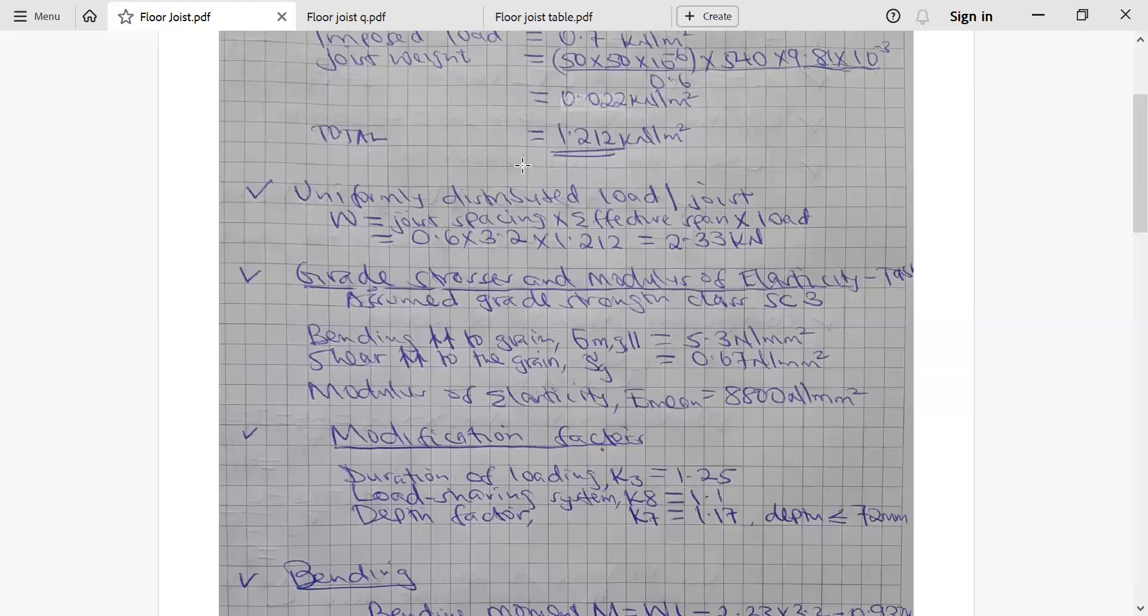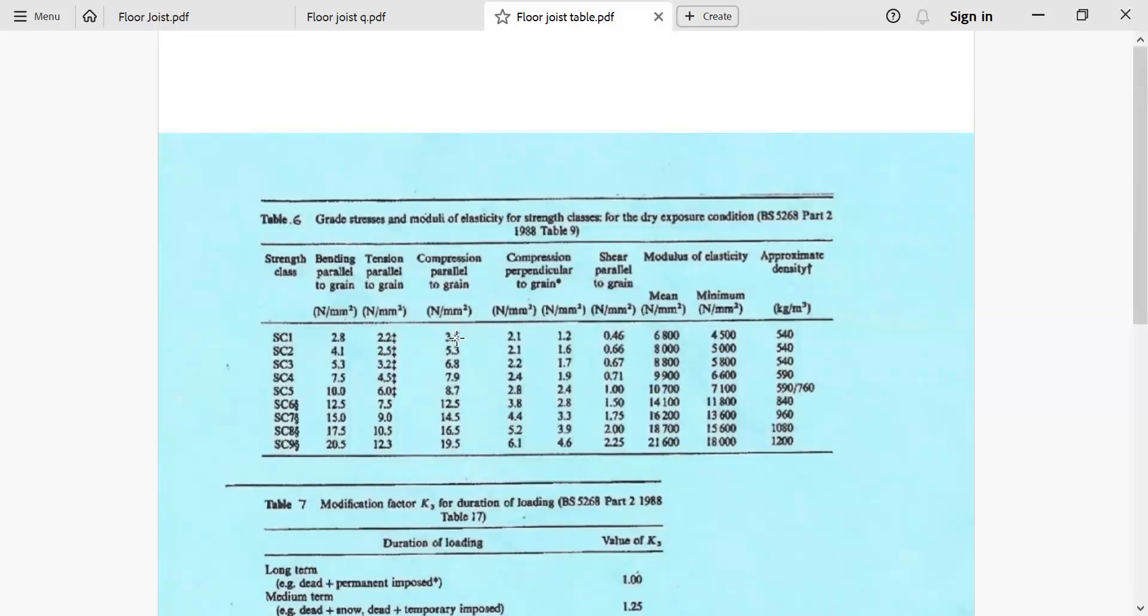We come to our table comfortably. Our SC3 is the third section in the strength class column. Move along it: bending parallel to grain, it has 5.3 newton per millimeter squared. Then move up to shear parallel to grain, 0.67 newton per millimeter squared. Modulus of elasticity, that is capital E. We look at the column of mean average, not mean for the lowest. It has 8,800 newton per millimeter squared. And the density we had used, the last column is approximate density, that is where I used the 540 I took from this particular table.